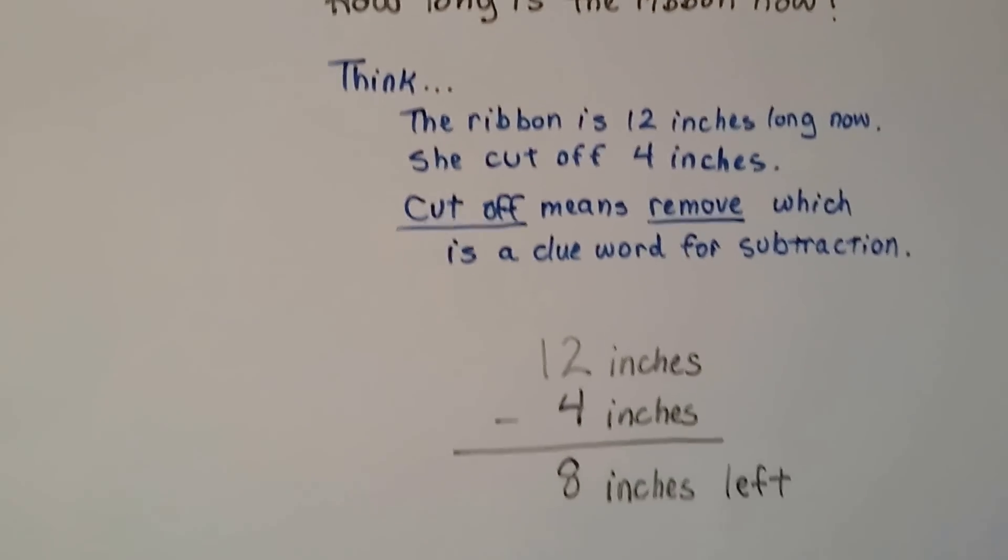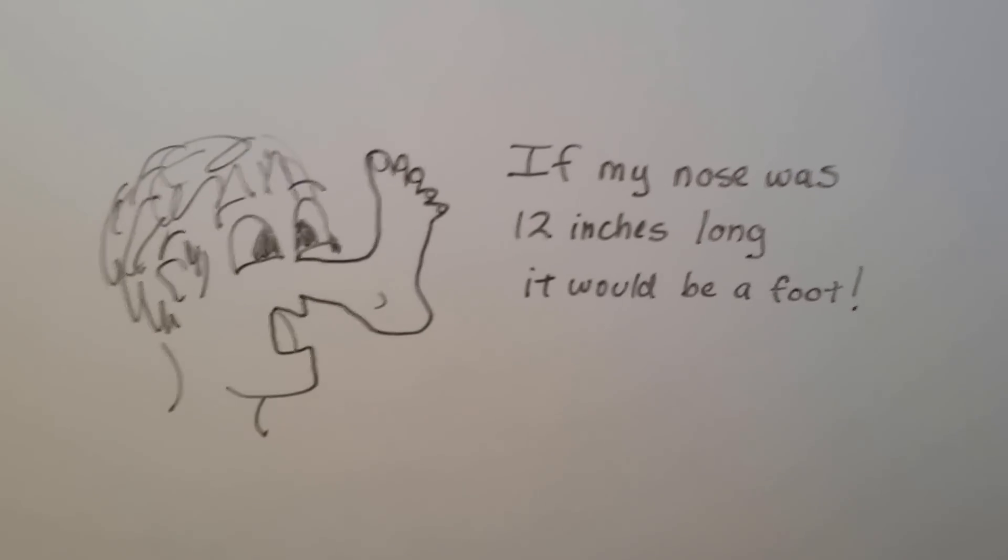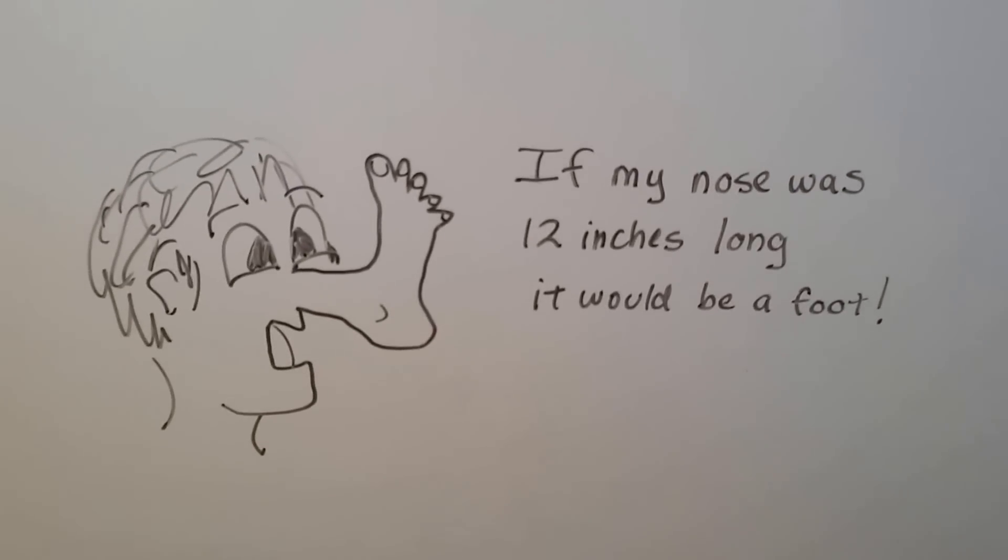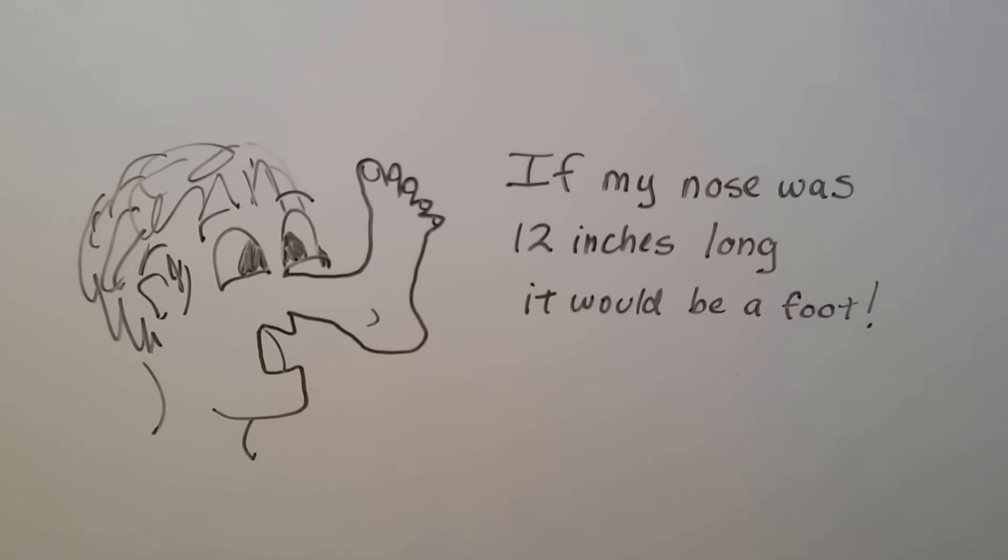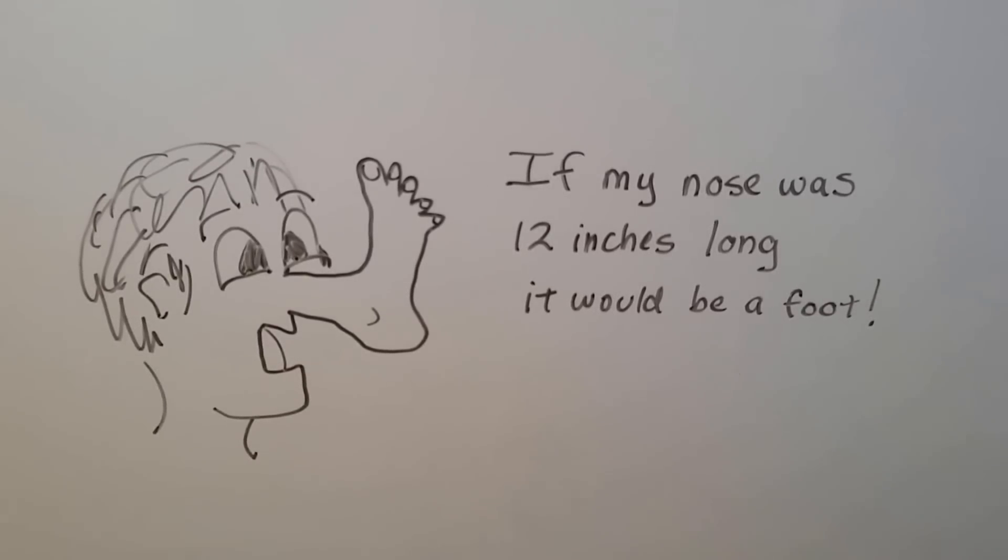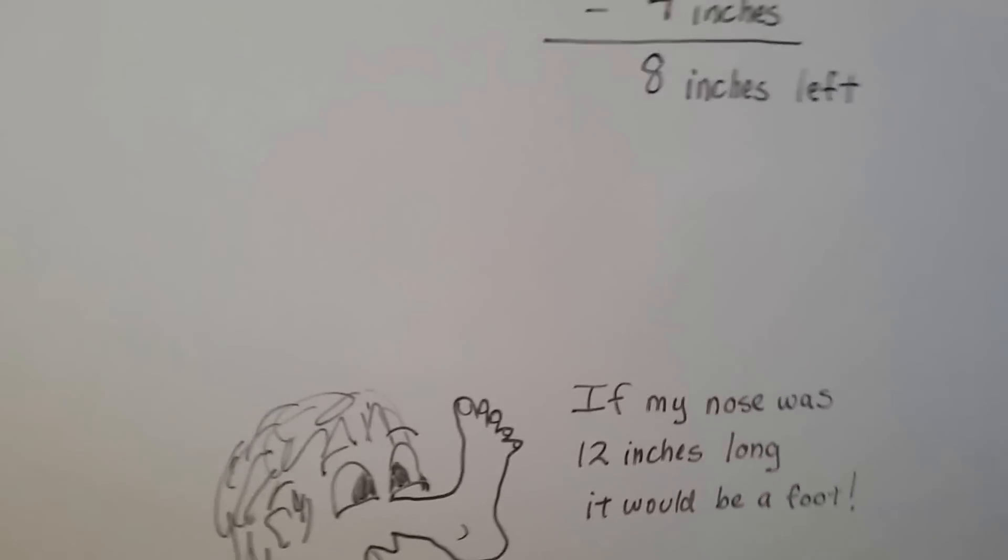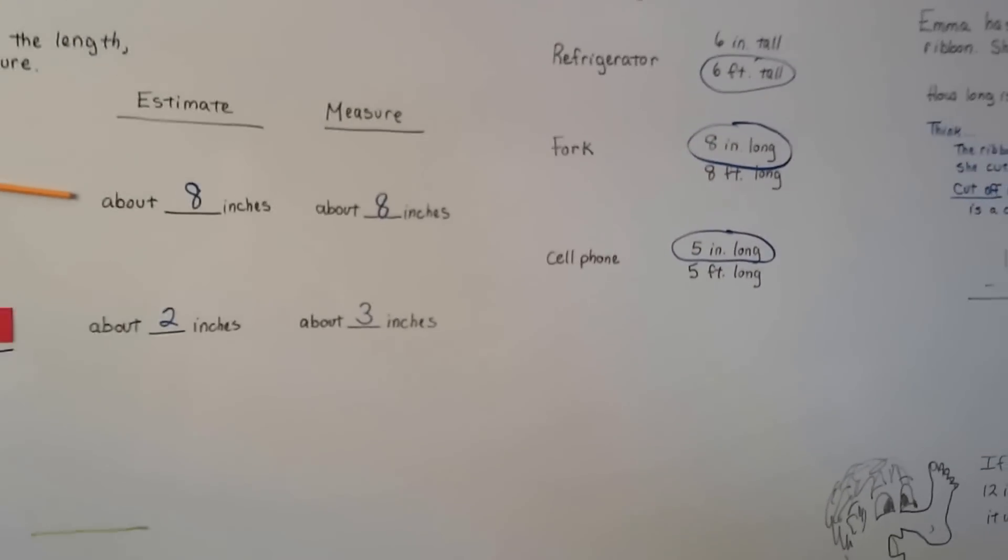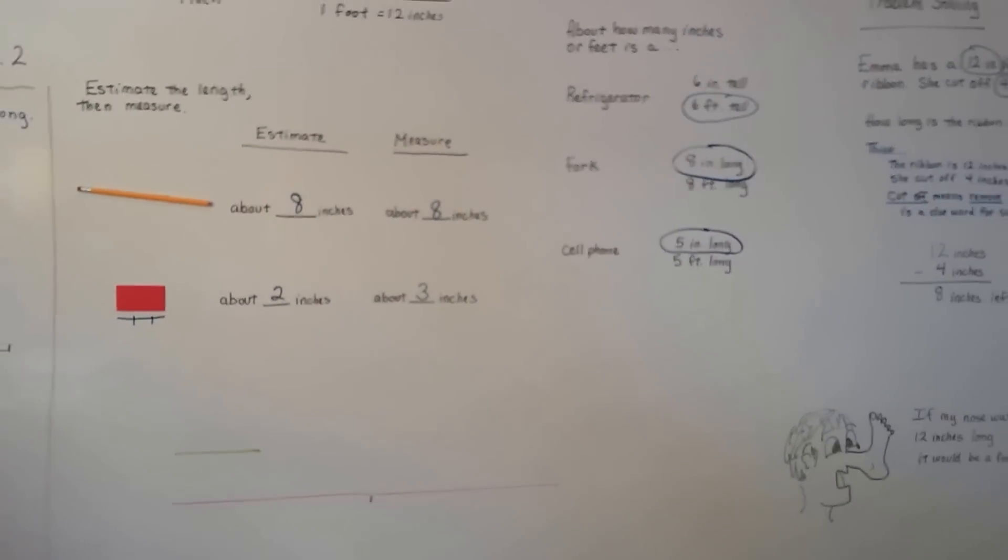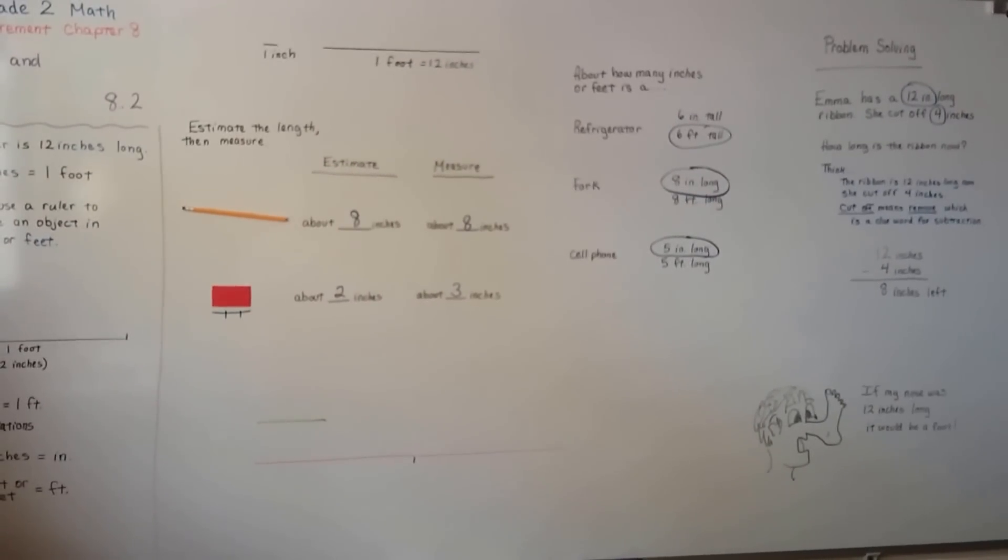So, I have a cute little funny thing I use for third graders, and I'm going to show it to you. Look at this. It says, If my nose was twelve inches long, it would be a foot. Do you get it? Because twelve inches is a foot? Isn't that silly? So, that's inches and feet, and we're going to continue talking about measurements. We're going to talk about yards next. Did you know a yard is three feet? That's what we're going to talk about. I hope I'll see you there.